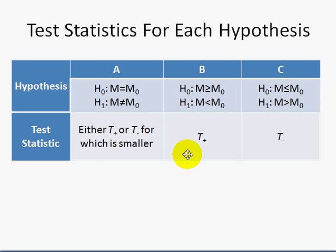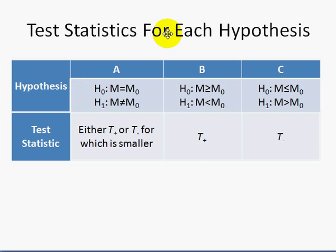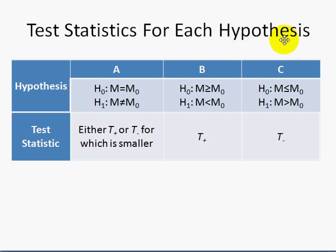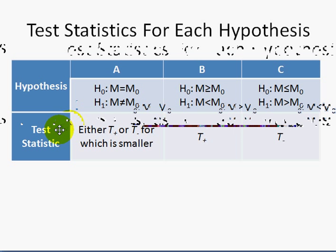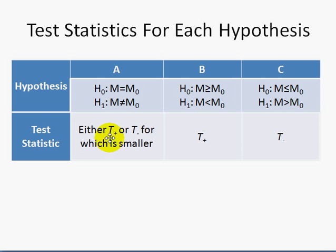This is the test statistic used in each hypothesis case. For Case A, we take the test statistic as either T-positive or T-negative, whichever is smaller. For Case B, we take the test statistic T-positive. While for Case C, we take the test statistic T-negative.